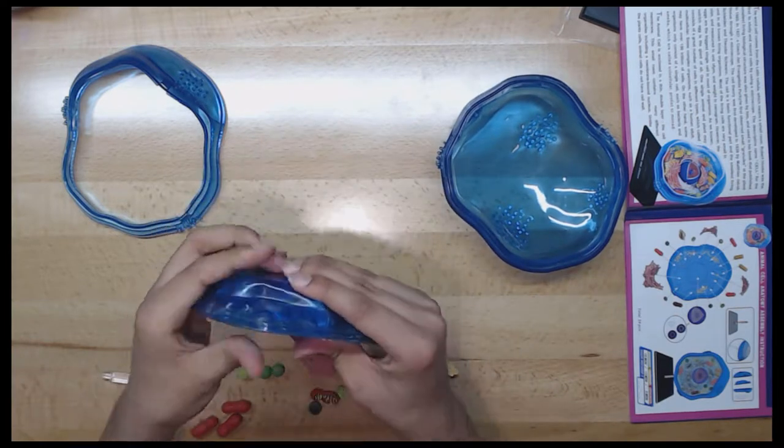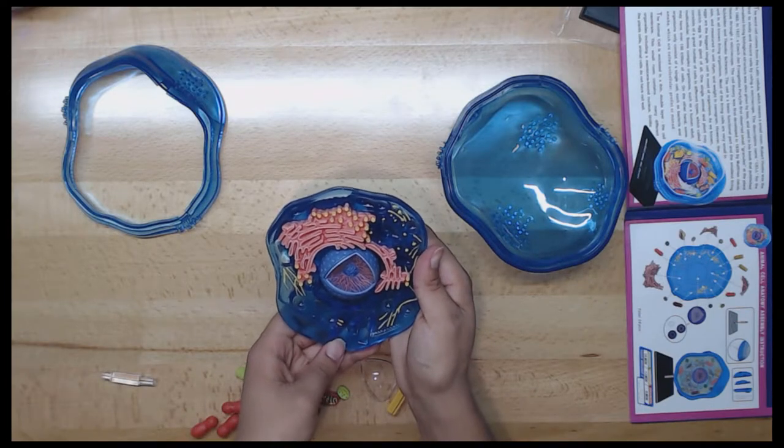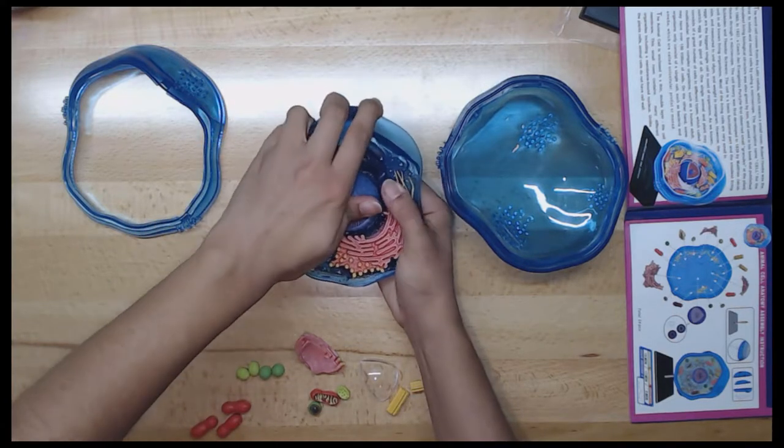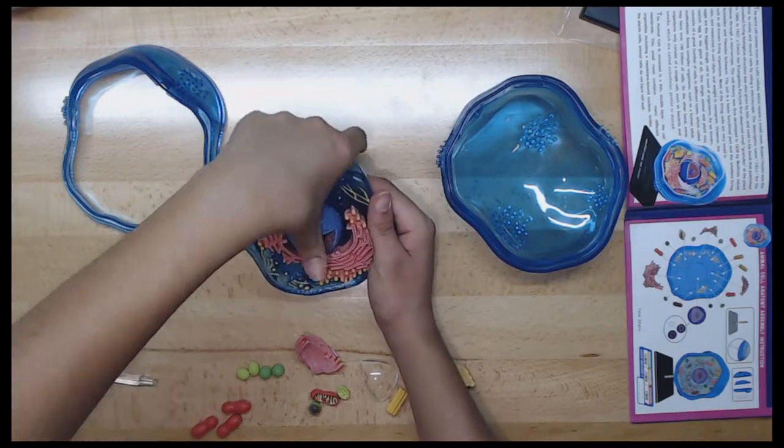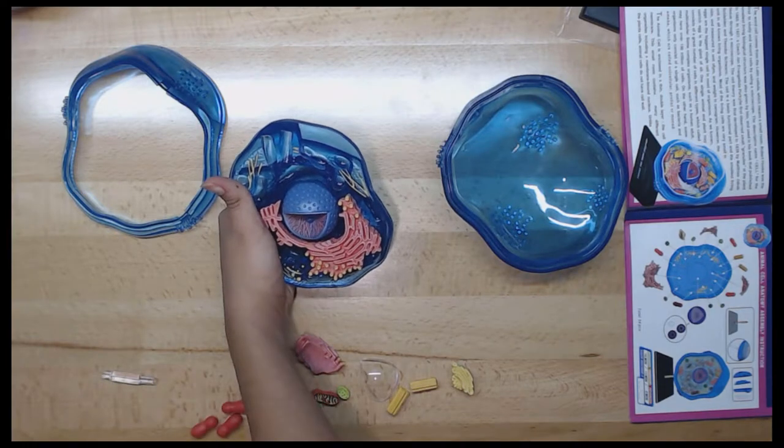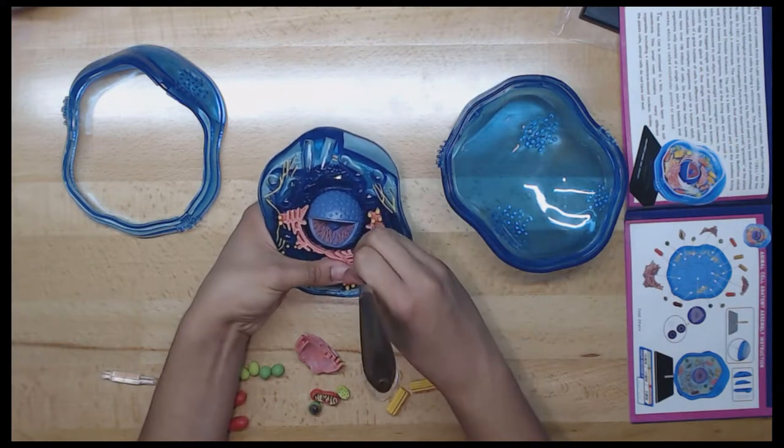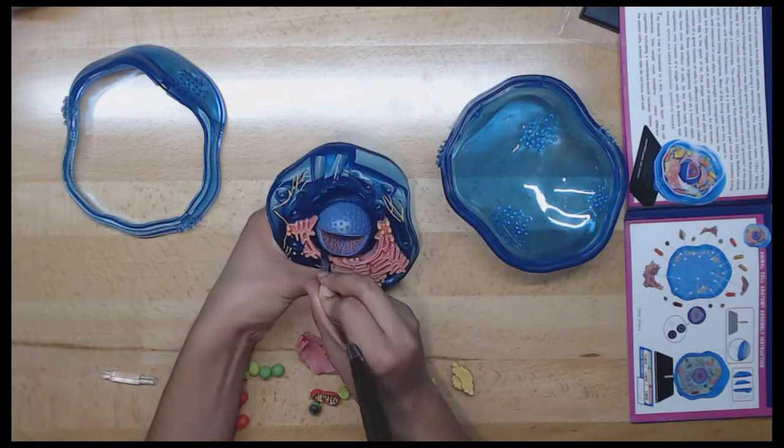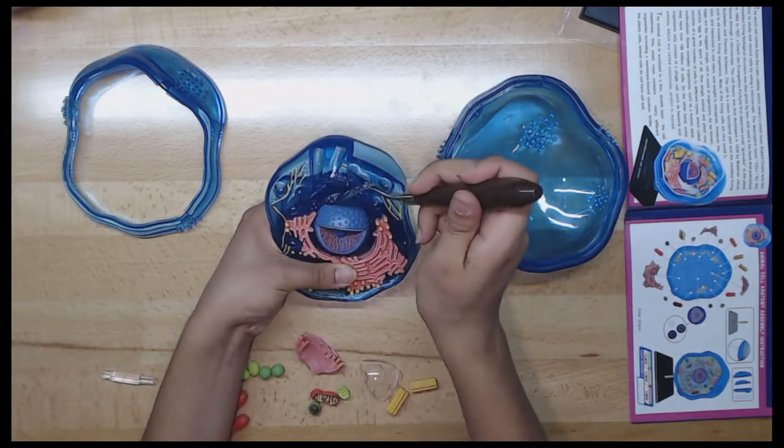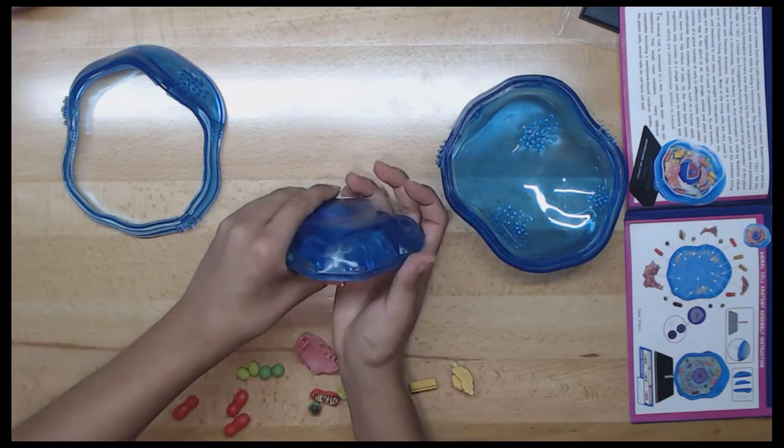Next, we have the centrosome. The centrosome in animal cells is also called the microtubule organizing center, or MTOC, which consists of a pair of centrioles that is only in animal cells. During animal cell division, the centrioles replicate and the centrosome divides. Then, the two centrosomes move to the opposite ends of the nucleus, and the microtubules of the centrosomes grow into a spindle, which is responsible for separating replicated chromosomes into the two daughter cells.